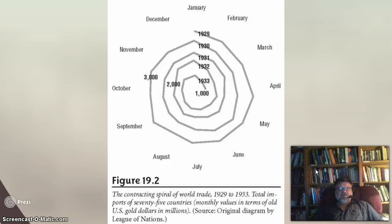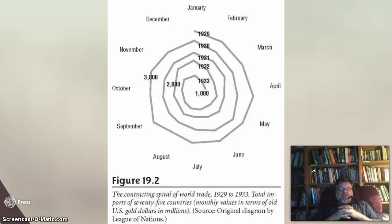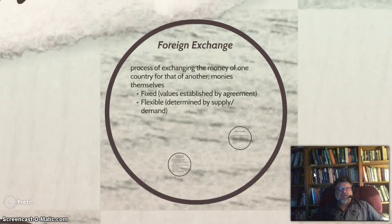Here is a picture of the contraction of international trade — a contracting inward spiral of world trade during the Great Depression, 1929 to 1933. In January 1929 it was fairly expanded, but as those four years went on, international trade began to contract and implode. For a period of time, international trade almost came to a stop, and the flow of money internationally slowed to a trickle. That was the Great Depression.